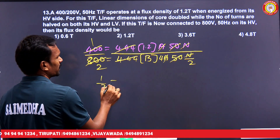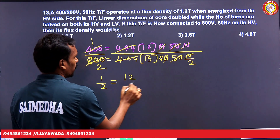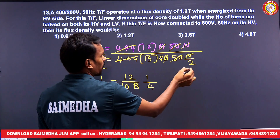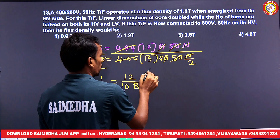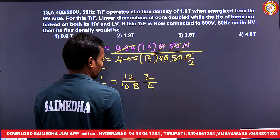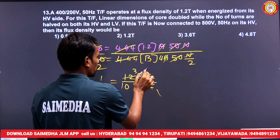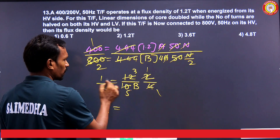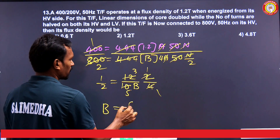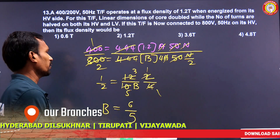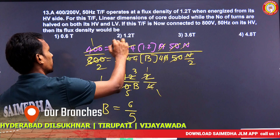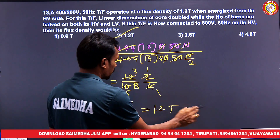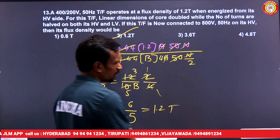After substitution and simplification, we get 1.2 × (1/4) × 2 = 6/5, which equals 1.2 Tesla. So the flux density remains 1.2 Tesla.